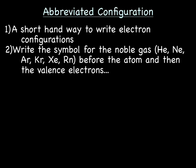Let's try another one — how about oxygen? Why don't you write out the electron configuration for oxygen, and then see if you can write the abbreviated configuration. Hit pause, try it out, and then hit play to see how you did.